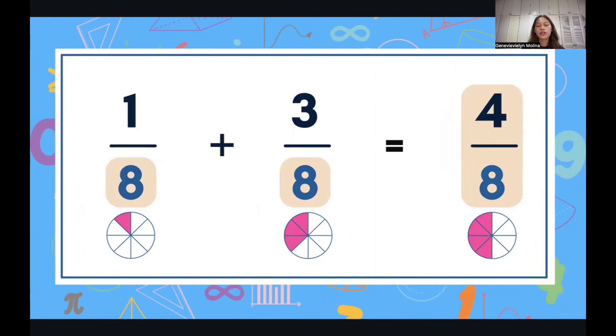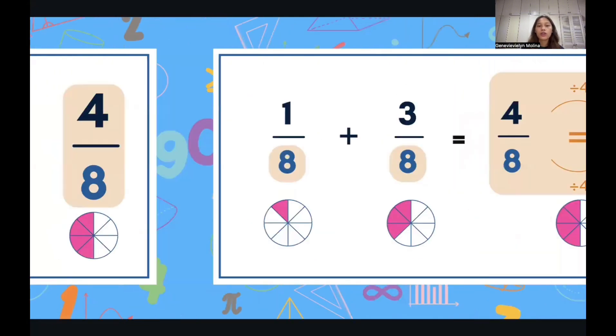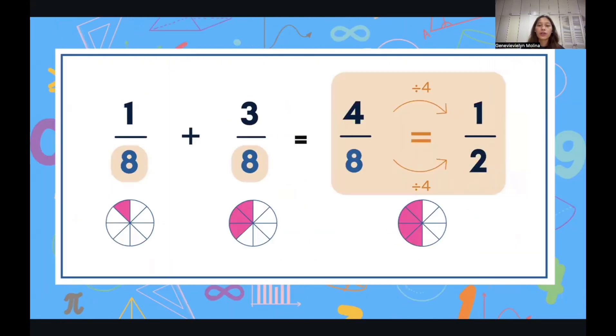And our answer is not yet in its simplest form, so we must simplify it. And to simplify, we just have to divide both the numerator and the denominator into their LCD, which is 4. So 4 divided by 4 is 1, and 8 divided by 4 is 2, so we'll get an answer of 1 half.